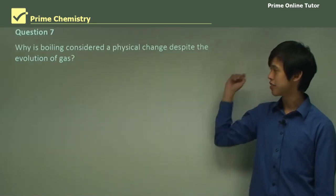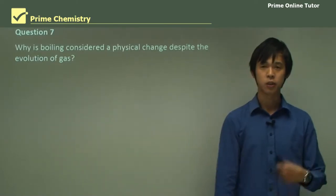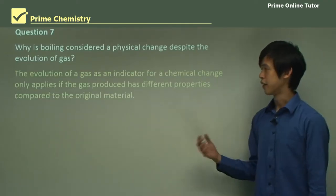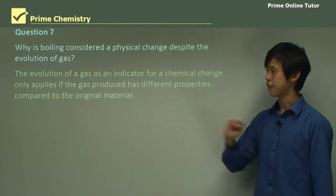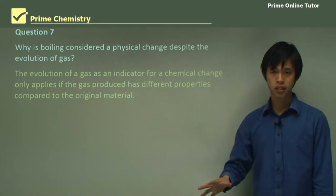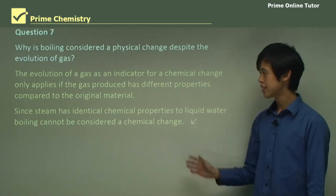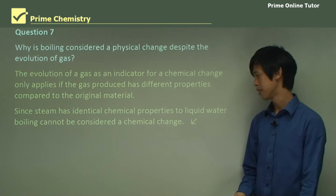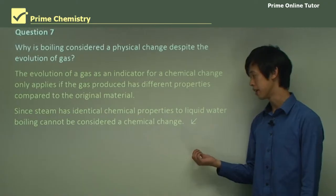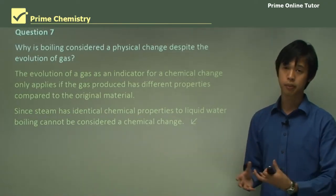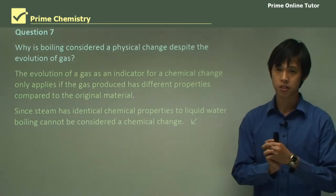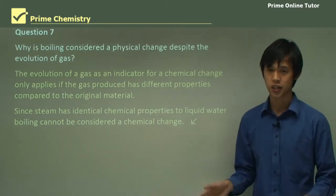Question 7: Why is boiling considered a physical change despite the evolution of a gas? We looked at this at the end of last lesson. The evolution of a gas as an indicator for a chemical change only applies if the gas has different properties to the original material. Since steam has identical chemical properties to liquid water, boiling can't be considered a chemical change because the steam has exactly the same chemical properties as the liquid water. So it's only a physical change.